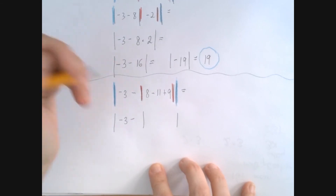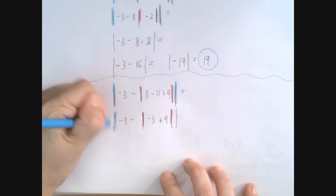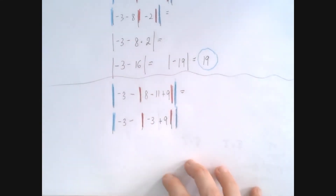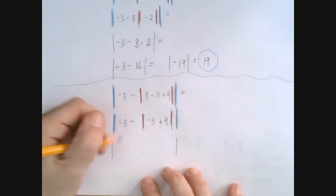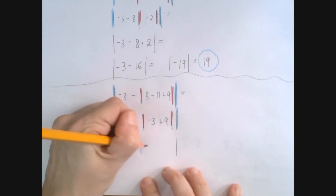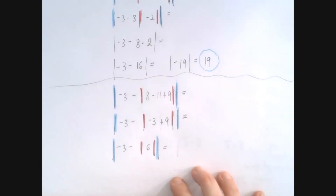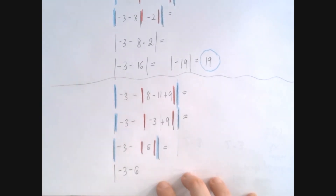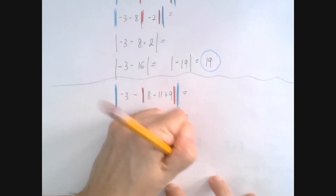8 minus 11 is negative 3. We're still working in the innermost absolute value, which also functions as a grouping symbol. Negative 3 plus 9 is 6. So from negative 3, we subtract the absolute value of 6. The absolute value of 6 is 6, so from negative 3 we're subtracting 6. That means we have the absolute value of negative 9, which is 9.